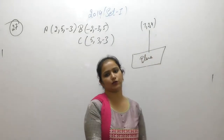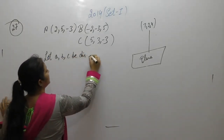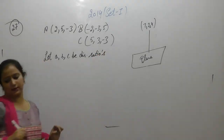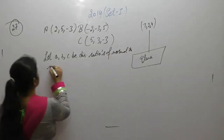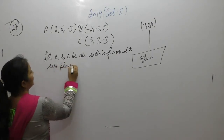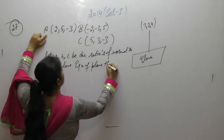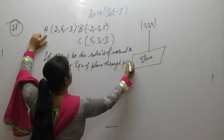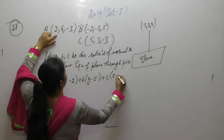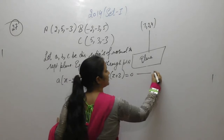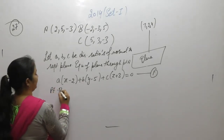Let A, B, C be the direction ratios of the normal to the required plane. The equation of the plane through point A(2, 5, −3) is: a(x − 2) + b(y − 5) + c(z + 3) = 0. Since points B and C also lie on this plane, we substitute them into this equation to get two more equations.